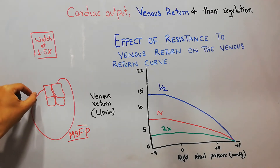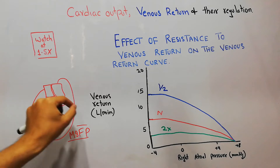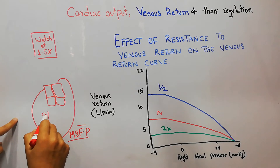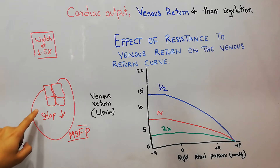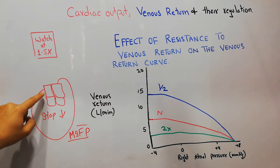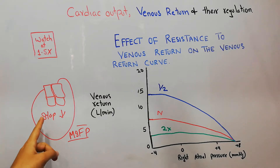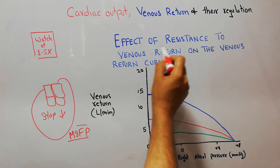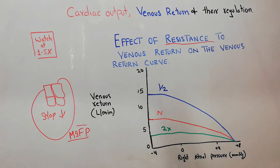There is resistance in the veins and arteries which is trying to stop or decrease the blood returning to the heart. This resistance — trying to stop or decrease the amount of blood returning to the heart — is basically known as the resistance to venous return.